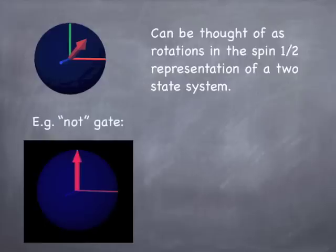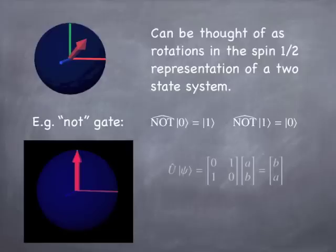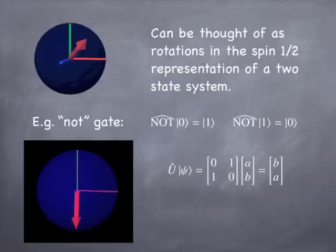For example, the NOT gate takes the 0 state and makes it into the 1 state, and takes the 1 state and converts it to the 0 state. In a vector representation, the generic state is a column vector with amplitudes A and B, and the NOT gate simply flips those amplitudes. That is nothing other than a rotation about the x-axis — our sigma-x operator. So a NOT gate is simply sigma-x.